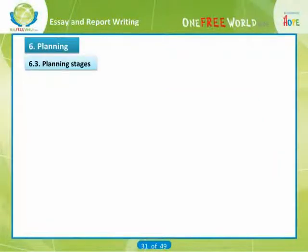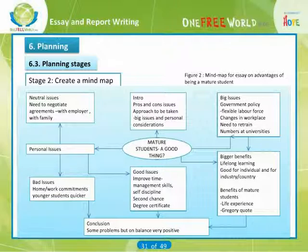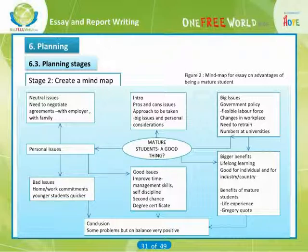Now you need to think about grouping the ideas and creating a flow for your assignment. We started by grouping together our ideas and material for the essay on the possible advantages of being a mature student. This helped us to create a mind map by seeing where links could be made, making it much easier to decide where the weight of evidence was taking our argument. Grouping the parts of your assignment together and making links helps to ensure that you avoid a disjointed response to the question. It can also show how balanced your answer is going to be.